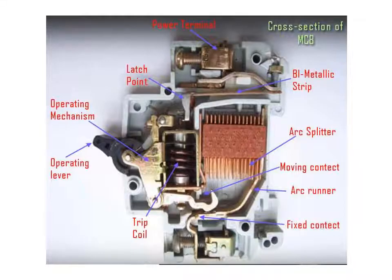In the MCB diagram, at the top right there is a bimetallic strip for overload protection, and on the left side there is a trip coil — the electromagnetic relay — for short circuit protection. There is a fixed contact and a moving contact visible at the bottom right.